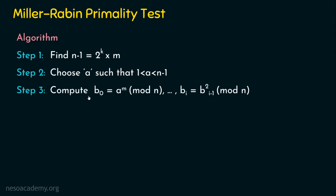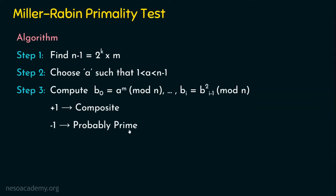In step three, we compute b0 equals a to the power m mod n, using the value of a from step two and m from step one. If b0 equals plus 1, it is a composite number. If b0 equals minus 1, it is probably prime. If b0 is neither plus 1 nor minus 1, we compute b1 equals b0 squared mod n. If that result is also neither plus 1 nor minus 1, we proceed to b2, then b3, and so on.